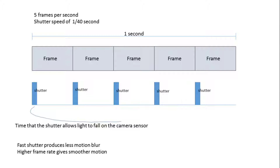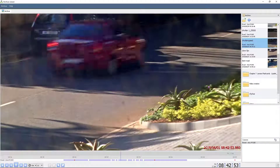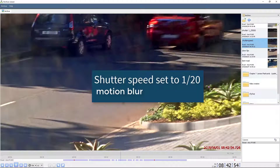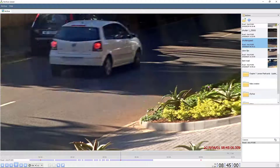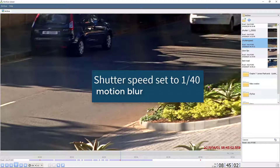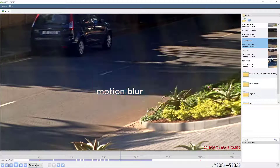Another important setting is the shutter speed, which is different to frame rate. Shutter speed is the time allocated for light to fall on the camera sensor to create an image. The frame rate is how many consecutive images per second are produced and affects the smoothness of the motion of the video. A fast shutter speed reduces motion blur in the image.